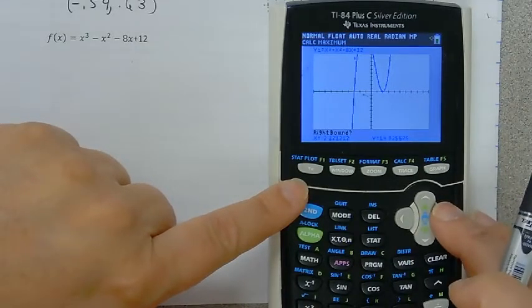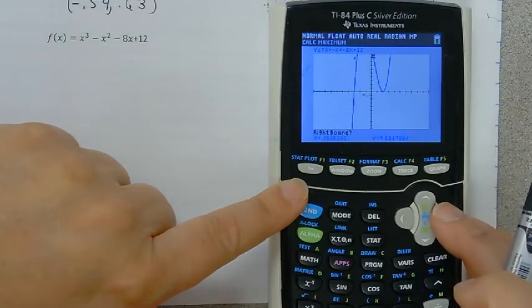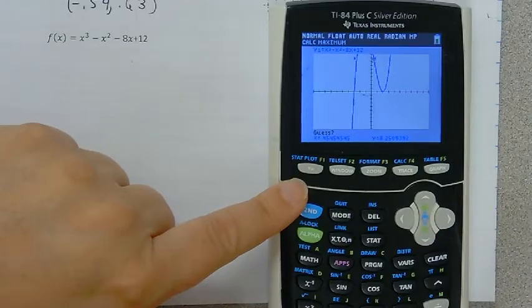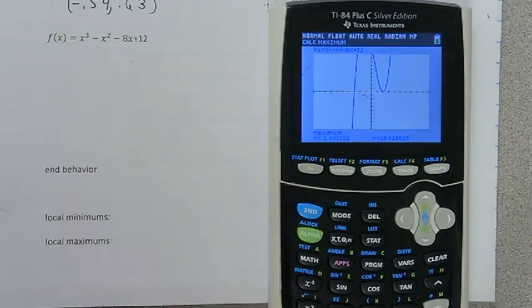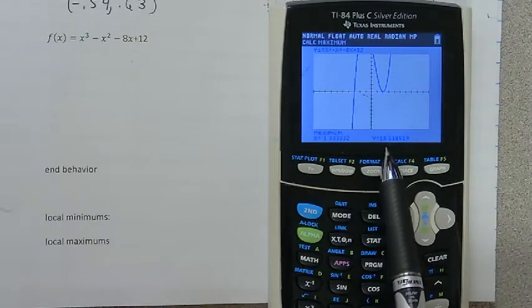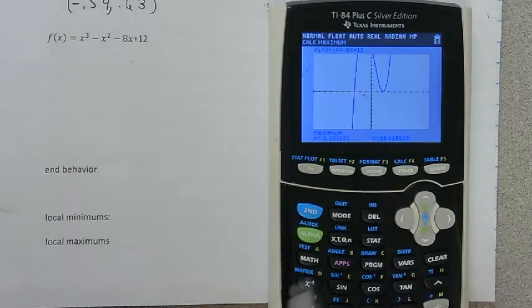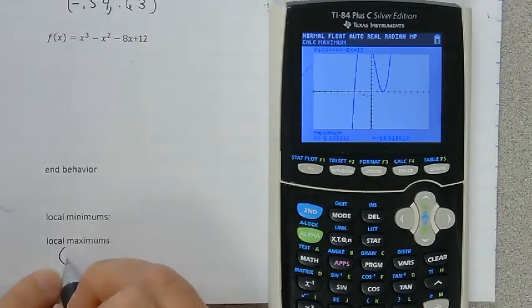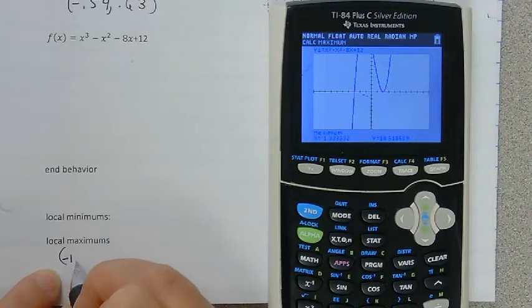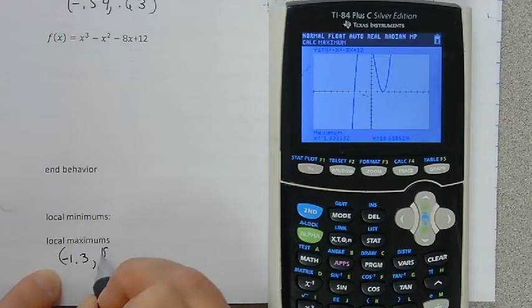And now it wants me to go to the right side so I'm going to keep hitting right until I can see my cursor again. There we go. And then I'm going to hit enter because I don't want to guess. So it looks like this thing is going to go up to about 18.5. I'm going to go ahead and write that down. I found the maximum is at negative 1.3, 18.5.